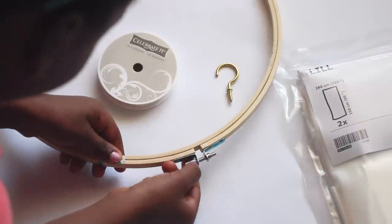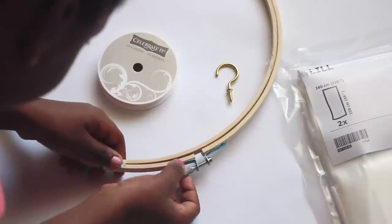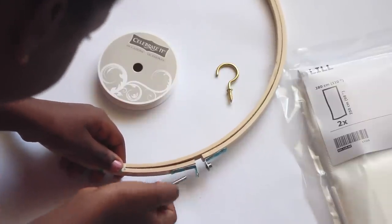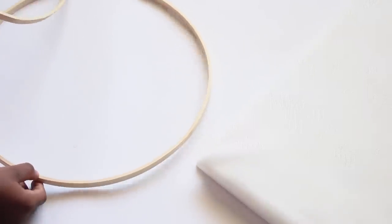First thing you want to do is separate the inner and outer rings on your quilting loop and you just do that by unscrewing the little screw off the top and you just separate them. They pull right out very easily.